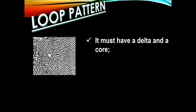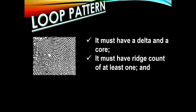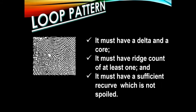The loop pattern is the type of fingerprint pattern in which one or more ridges enter upon either side and then recurve, touch or pass an imaginary line between the delta and the core, and then pass out or tend to pass out upon the same side of the ridge entered. In other words, a loop pattern must have a delta and a core, and it must have a ridge count of at least one. Likewise, it must have a sufficient recurve wherein it is not spoiled. These three are the elements of a loop pattern.